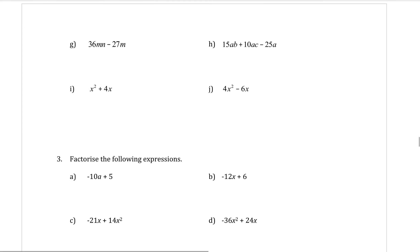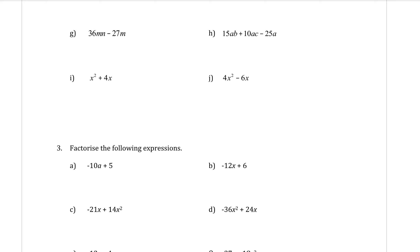Example G: the highest common factor is 9, and the letter M is in both terms, so 9M comes out the front. Open the bracket: 36 divided by 9 is 4, the M has come out so the N needs to be inside — giving 4N. Minus sign. Then 27 divided by 9 is 3, and the M has come out the front. So we get 9M(4N − 3).